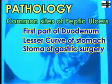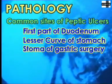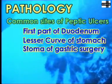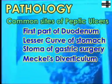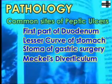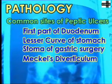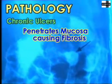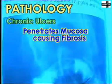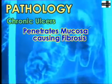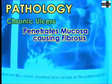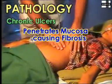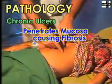However, ulcers could also occur in the esophagus, in the stoma following gastric surgery, or even in ectopic gastric epithelium in Meckel's diverticulum. A chronic ulcer penetrates the mucosa into the muscle coat and causes fibrosis, which could lead to deformities such as pyloric stenosis.